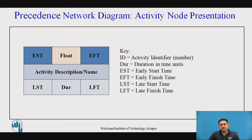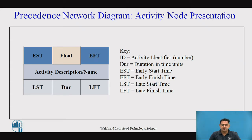This is a typical representation of an activity in the precedence network diagram. Here we observe that the rectangular node is divided into various cells for the activity times, its duration, as well as float and its description.